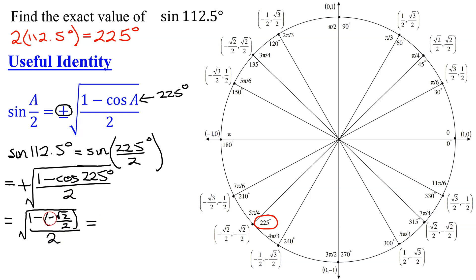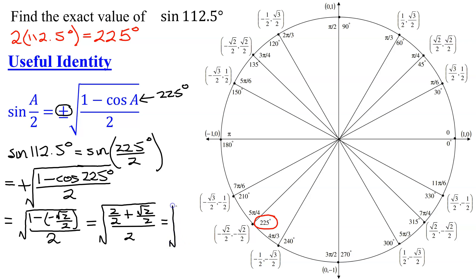Now to simplify, I need to add fractions in the numerator. This fraction in the numerator has a denominator of 2, so I'm going to have to turn 1 into a fraction with a denominator of 2. So the 1 turns into 2 over 2, and minus a negative becomes positive the square root of 2 over 2, all divided by 2. Now I can add my numerators. Sorry, I'm running out of room here. I'm going to get 2 plus the square root of 2 over 2.